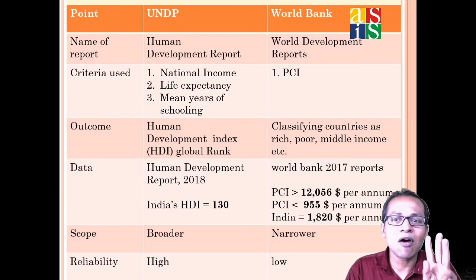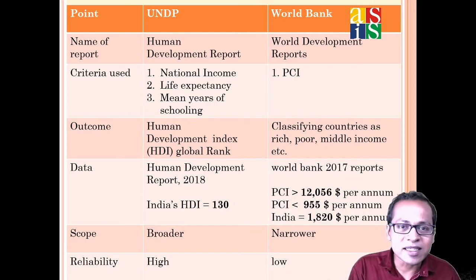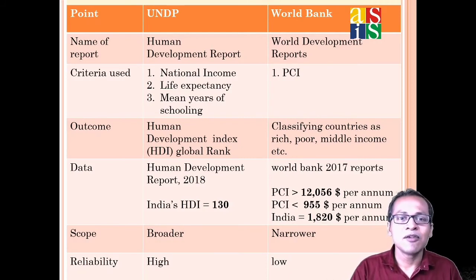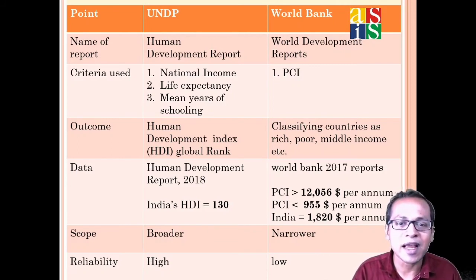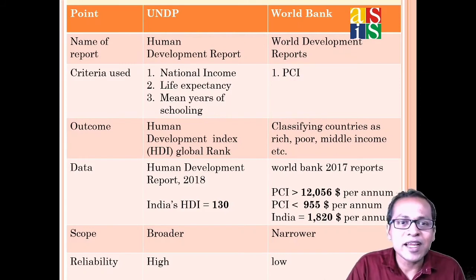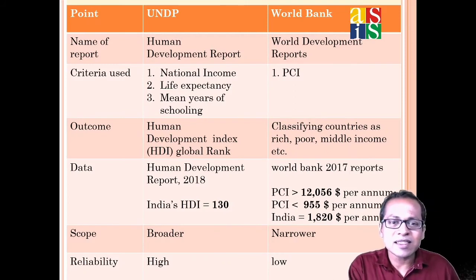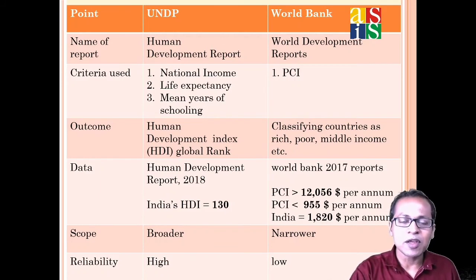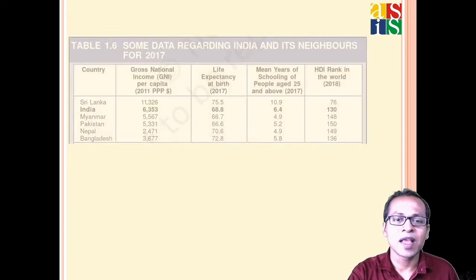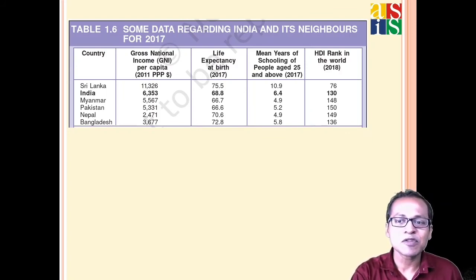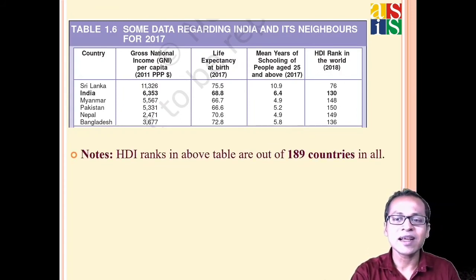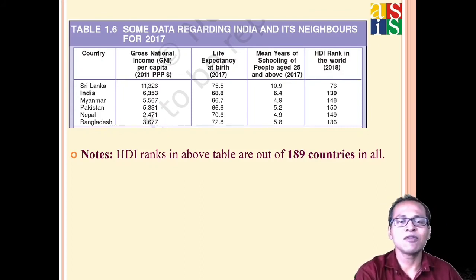UNDP relies on income, health, and education — three criteria — making it a better version for comparing development than the World Bank. World Bank considers only one criterion: per capita income. Another advantage of UNDP is that it gives rankings, not just a rich/poor classification, enabling better comparison. Sri Lanka is doing better than India — Sri Lanka's ranking was 76 while India was 130, out of 189 countries in the 2018 report. India still has a very long way to go.